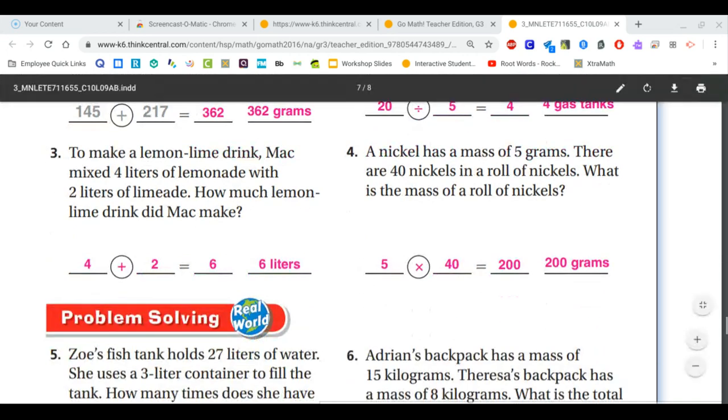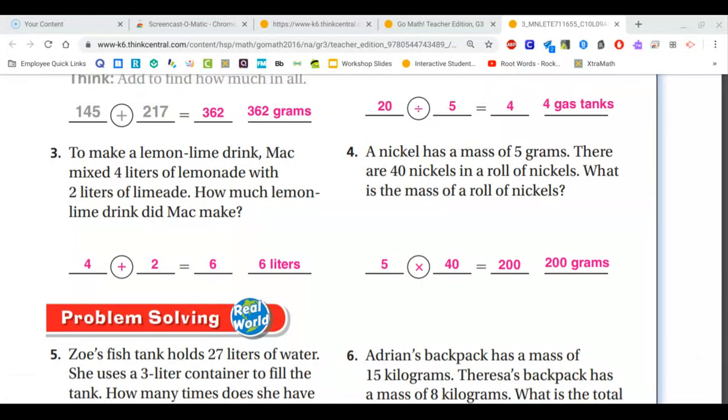For number three, when it says that Mac mixed four liters with two liters, that tells us that we need to add. So we have four plus two, which equals six.